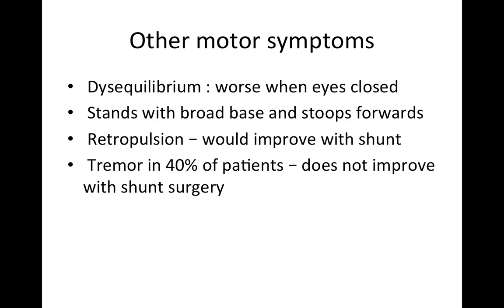Besides gait disturbance, there are other motor symptoms. There is disequilibrium which is worse when the patient closes his eyes. The patient stands with a broad base and stoops forward. There is retropulsion, which improves with shunt surgery. Tremor is not a common finding but is seen in 40% of patients; however, shunt surgery does not improve tremor. Upper limbs are less likely to be affected, except for dyskinesia and tremor.